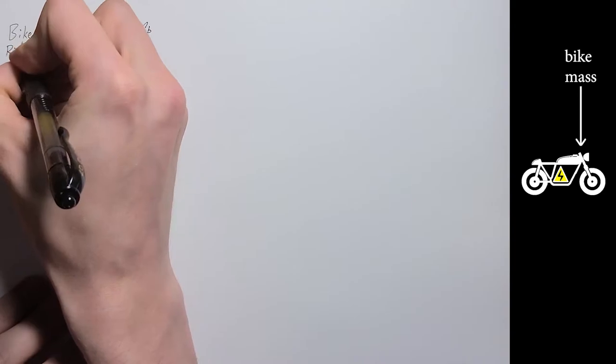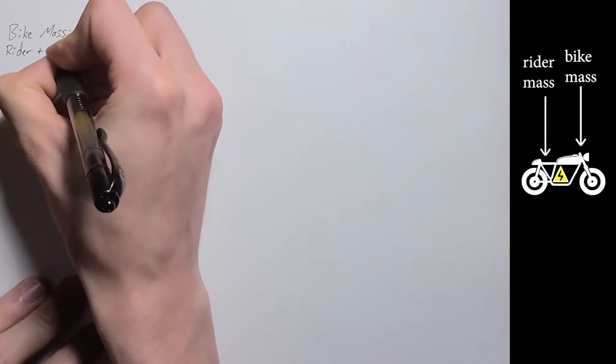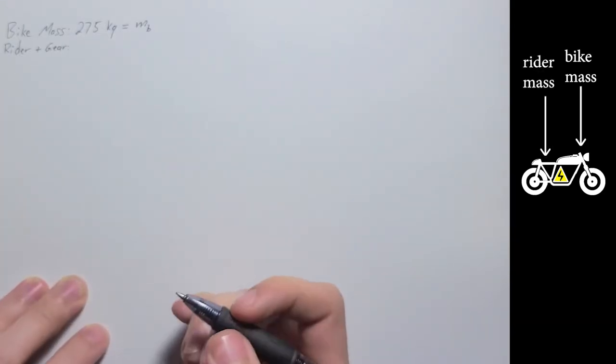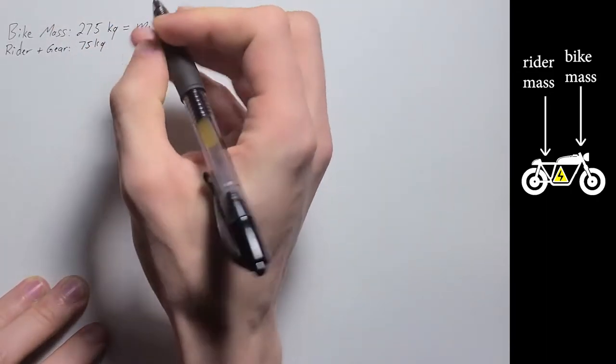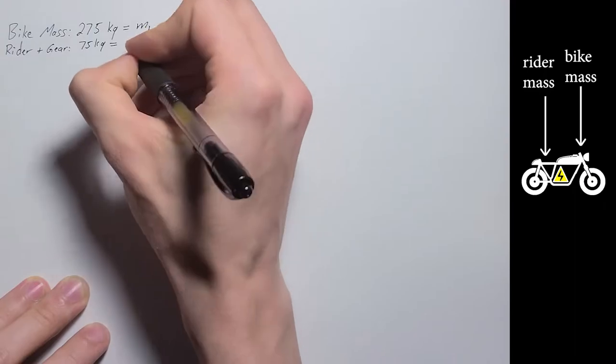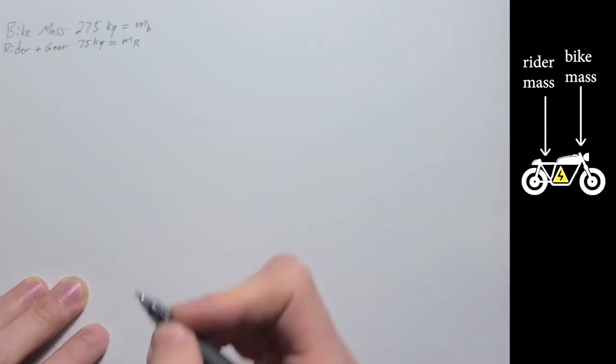So for rider plus gear, this is going to be me plus my gear weight. I'm going to ballpark that for around 75 kilograms. That is going to be the mass of the rider.